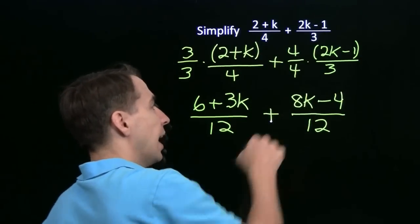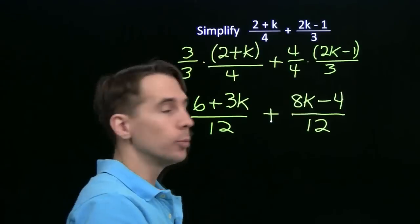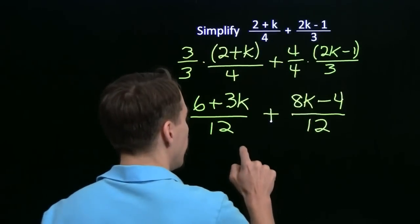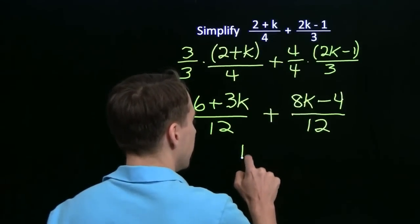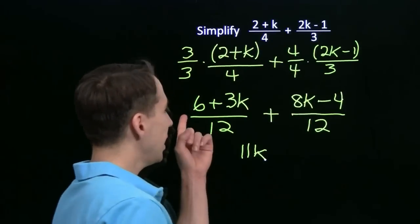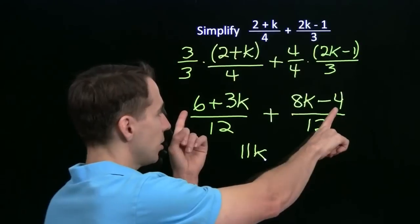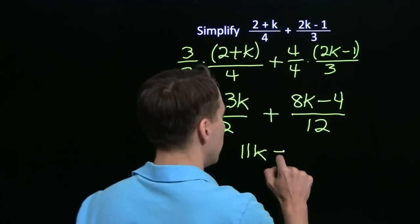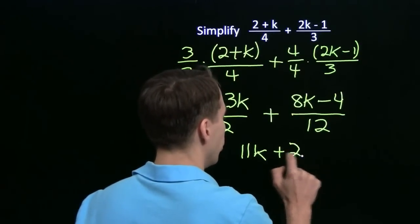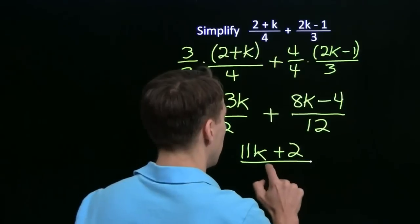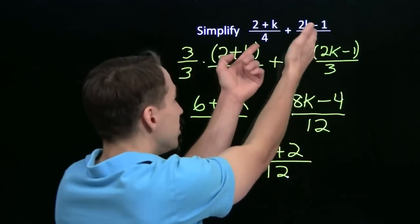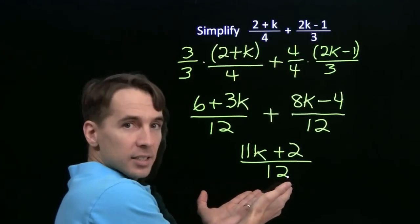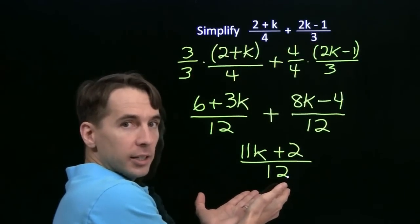Since the denominator is the same, all I have to do is add the numerators. 3k plus 8k is 11k, and 6 minus 4 is 2. When I add these two fractions, I get this single fraction.